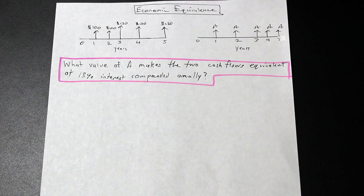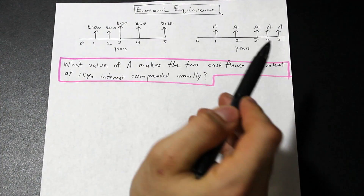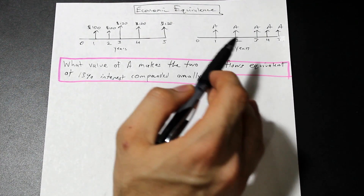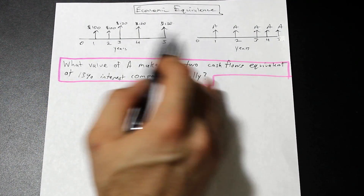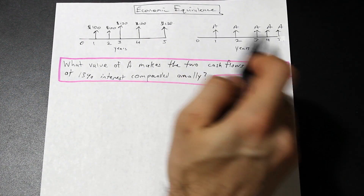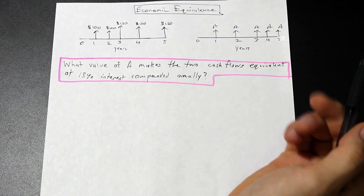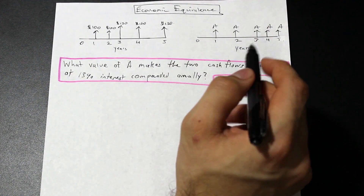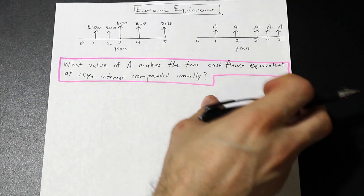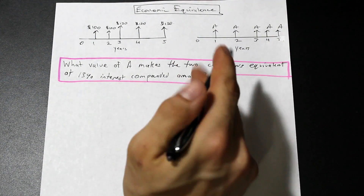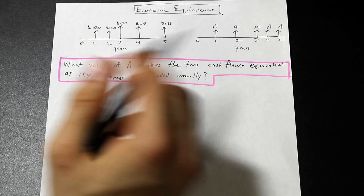So the question asks: what value of A makes the two cash flows equivalent at 13% interest compounded annually? The first thing you need to do is select a year at which you want to equate them, because you can't equate them generally — you need a specific year. The easiest place here looks like n equals zero, because we can apply the P-given-A formulas and break this up into annuities at n equals zero.